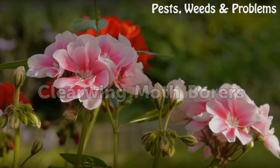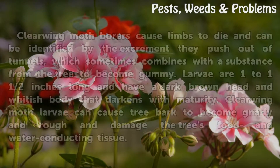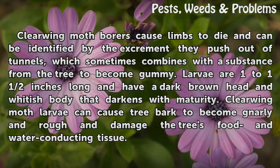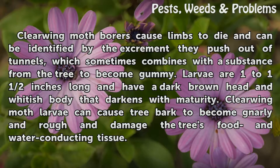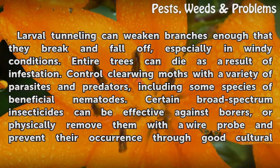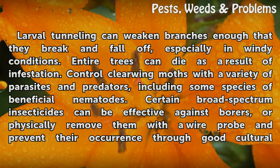Clearwing moth borers cause limbs to die and can be identified by the excrement they push out of tunnels, which sometimes combines with a substance from the tree to become gummy. Larvae are 1 to 1 and a half inches long and have a dark brown head and a whitish body that darkens with maturity. Clearwing moth larvae can cause tree bark to become gnarly and rough and damage the tree's food and water conducting tissue. Larval tunneling can weaken branches enough that they break and fall off, especially in windy conditions.